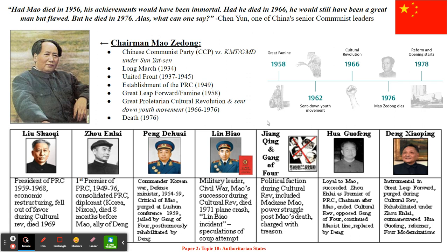Jumping to China, which is what we studied next. A little background on Chairman Mao Zedong — remember that the Chinese Communist Party existed first, then it was the army, then it was the state, and he takes on the role of chairman when he rises to power in 1949. Remember that cool quote we used for pre-writing: 'Had Mao died in 1956, his achievements would have been immortal. Had he died in 1966, he still would have been a great man but flawed. But he died in 1976.' That really represents Mao's two separate rises to power — the Mao of the Long March and the United Front who established the PRC, and the Mao responsible for the Great Leap into famine who came back with the Great Proletarian Cultural Revolution from 1966 until his death.